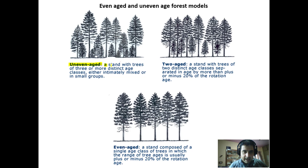An uneven-aged stand has trees of three or more distinct age classes, either intimately mixed or in small groups. This is an example of an uneven-aged forest model where you can see there are three tiers of trees.